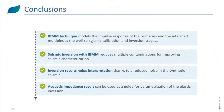As a conclusion, the IBMM technique models the impulse response of the primaries and the interval multiples at the well-to-seismic calibration and inversion stages. This seismic inversion with the IBMM option reduces multiple contamination and improves seismic characterization and interpretation. In terms of interpretation, we have synthetic seismic data with reduced noise and acoustic impedance benefiting from attenuation of multiples. This acoustic impedance result could also be used as a guide when performing an elastic inversion — for example, in QC or parameter selection, comparing results in terms of acoustic impedance with the IBMM-derived acoustic impedance.